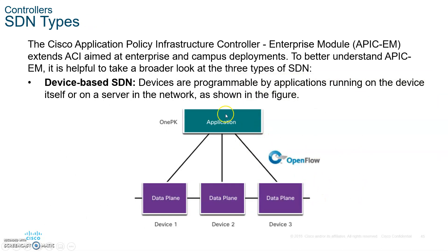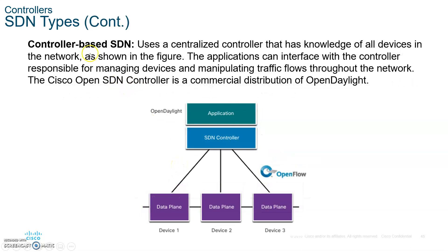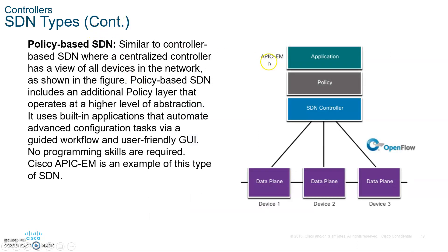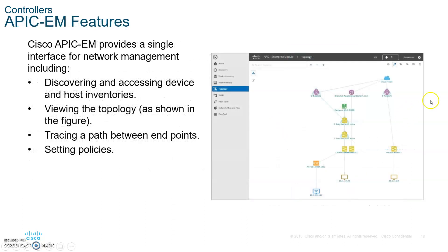There are three types of SDN. First, device-based SDN, where devices are programmable by applications running on the device itself or on a server in the network — OpenFlow is the protocol that gets you there. Second, controller-based SDN, where all configuration is done through controllers. Third, policy-based SDN, where you define a policy and the controller looks at that policy and configures all of your devices automatically.